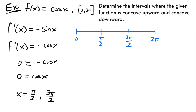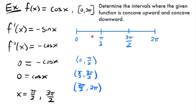Drawing a number line from 0 to 2 pi, we label pi over 2 and 3 pi over 2, giving us three intervals: 0 to pi over 2, pi over 2 to 3 pi over 2, and 3 pi over 2 to 2 pi. Let's test the value between 0 and pi over 2. I'll pick pi over 4. F double prime of pi over 4 equals negative cosine of pi over 4. Cosine of pi over 4 is square root of 2 over 2, so we have negative square root of 2 over 2, which is a negative value, meaning our function is concave down for that interval.